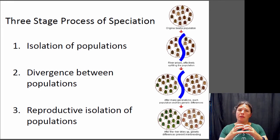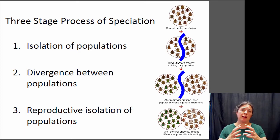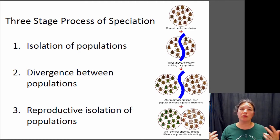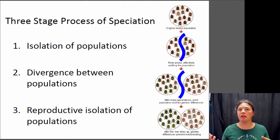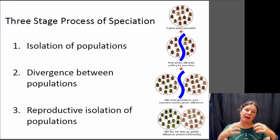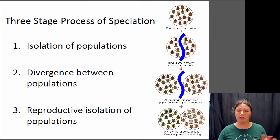This process can turn around at any point. If you get separation, some divergence, and then they come back together and just breed with each other and mingle back together, then any differences that were once there between those two populations are going to be lost and speciation doesn't occur. So you have to have that divergence, and when they come back there has to be something preventing them from interbreeding.